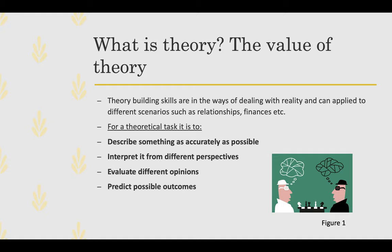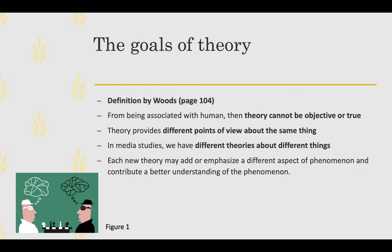For a theoretical task, it usually describes something as accurately as possible, interprets from different perspectives, evaluates those different opinions, and predicts possible outcomes. There is a definition here by Woods on page 104, which says that theory can be defined as a human account of what something is, how it works, what it produces or causes to happen, and how that something can be changed if necessary.